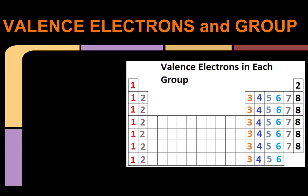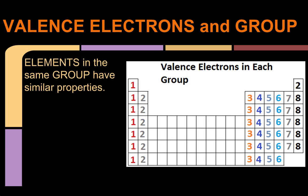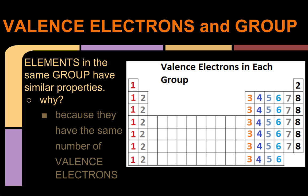Here's a quick review about valence electrons and how they relate to element groups. If you remember, elements in the same group have similar properties, and the reason for this is because they have the same number of valence electrons. If you look at our periodic table here, every single one of the elements in group one has one valence electron, group two, they all have two valence electrons.